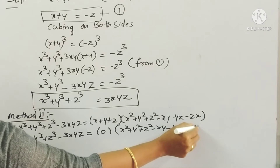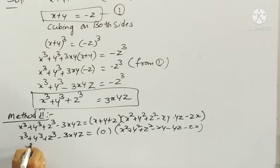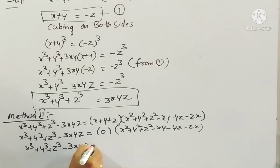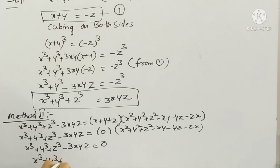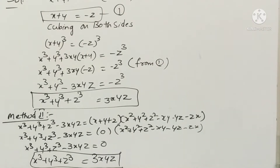Zero multiplied by anything is zero. So x cube plus y cube plus z cube minus 3xyz equals 0. Transposing minus 3xyz to the other side gives x cube plus y cube plus z cube equals 3xyz. You can solve using either method — it's your choice.